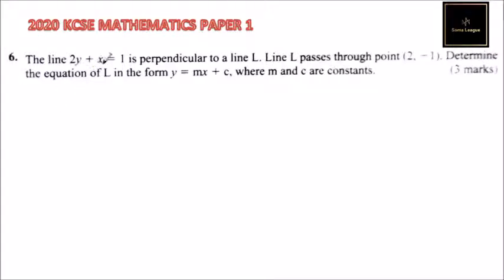We need to arrange this equation to the form y = mx + c so we know the gradient. We say 2y = -x + 1, taking x to the other side. Divide both sides by 2. You have y = -1/2 x + 1/2. So that is the equation in the form y = mx + c.